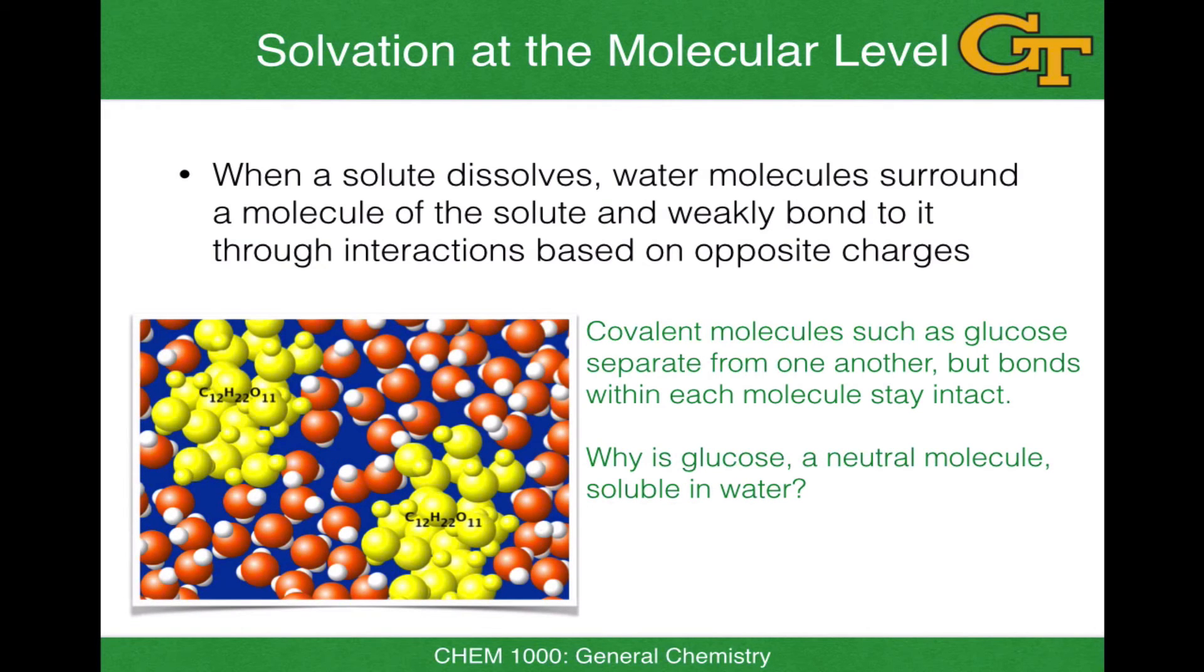For covalent molecules, molecules held together by covalent bonds, we don't see the same breaking apart effect that we see for ionic solutes. Covalent molecules, such as sucrose, stay together when solvated by water. But water does still interact with polar covalent solutes in some way, shape, or form. For example, in sucrose, there are a number of alcohol groups on the periphery that can hydrogen bond with adjacent water molecules. This hydrogen bonding holds water closely around the outside of the solute and leads to solvation.